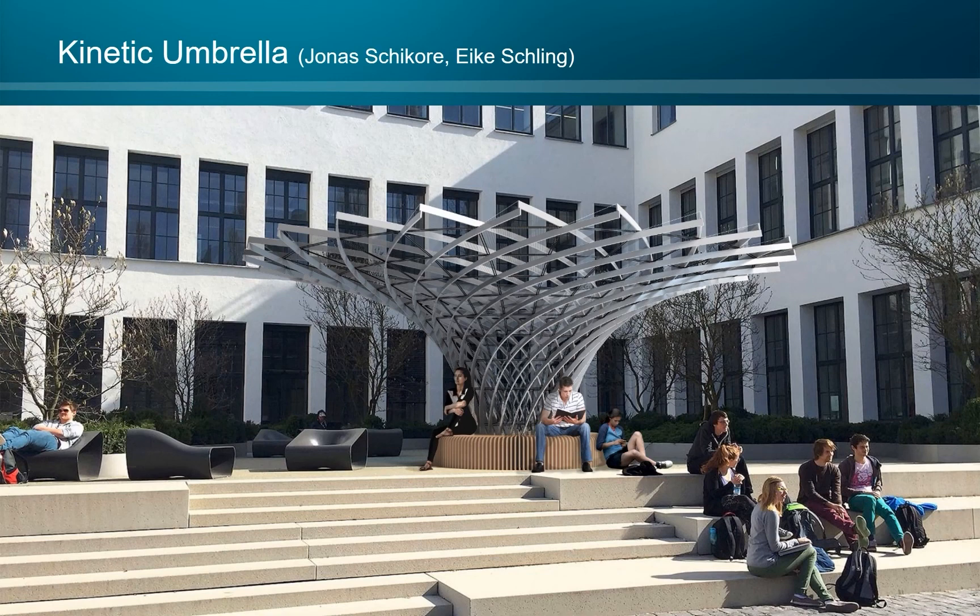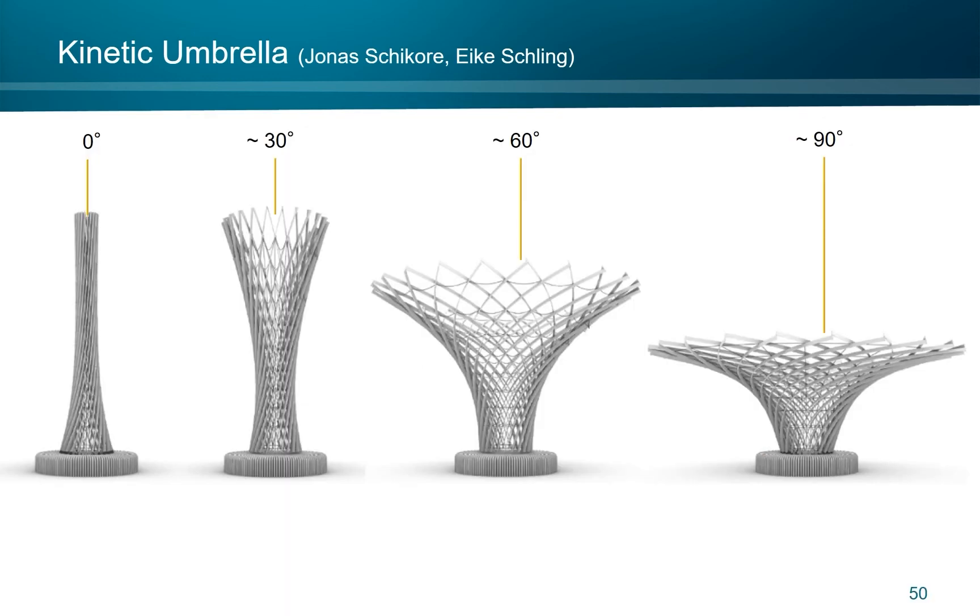So controlling the angles inside a quad mesh lets us design a transformable structure. This is an effect that we are very excited about. Our latest project is looking at a large scale elastic grid mechanism. The kinetic umbrella is currently under construction and will hopefully be completed in July. The elastic mechanism is controlled through vertical and horizontal cables, which shift the angles of the quad in the top row from 0 degrees to 30 to 60 and 90 degrees. The angles at the base remain constant. This causes a transformation from a cylindrical tower into a funnel-shaped umbrella.